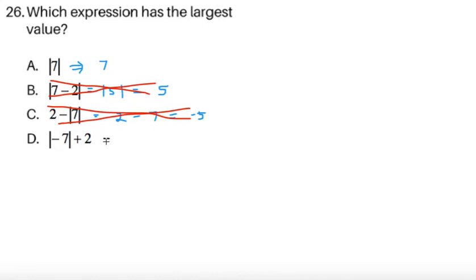Now for D, what's the absolute value of negative 7? It's still 7. So 7 plus 2, ah, this is the largest. 7 plus 2, that gives us 9. So we can finally cross A. So we've successfully crossed A, B, C. So we can conclude that choice D here has the largest value.